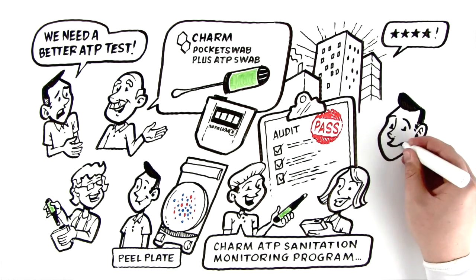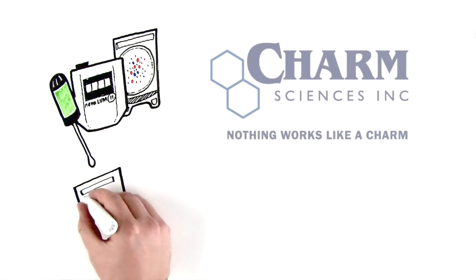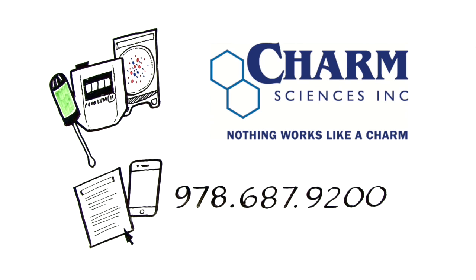As Jim discovered, sensitivity matters. To ensure the highest level of food safety and quality control at your plant, fill out the contact form or call 978-687-9200. Nothing works like a charm.